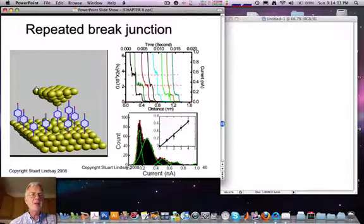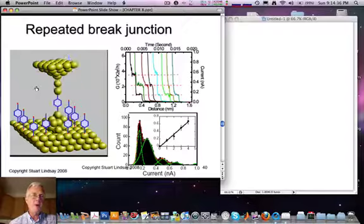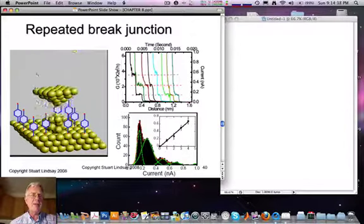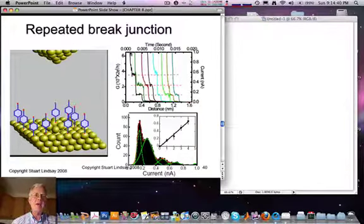And the result are little plateaus in the current versus time, or equivalently current versus distance plot, as shown over here. So you can see the conductance falling, and then a little step in here, and then a drop and another step.